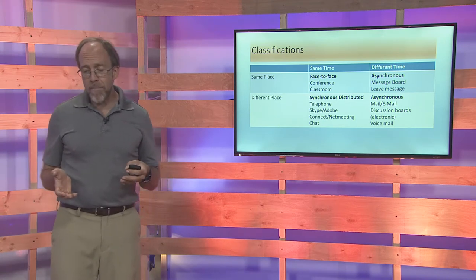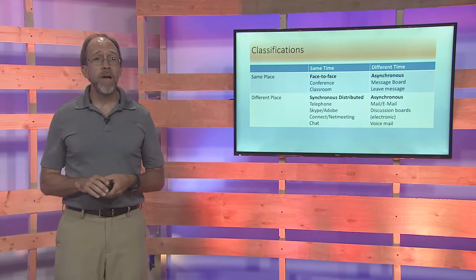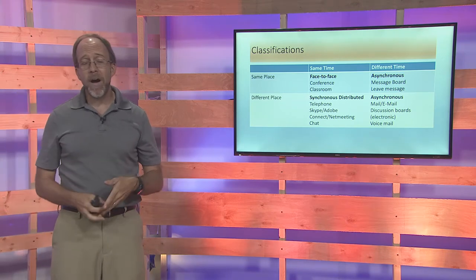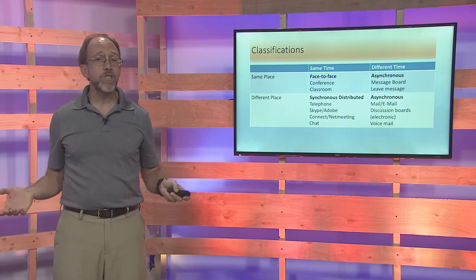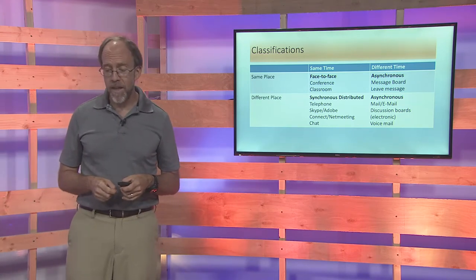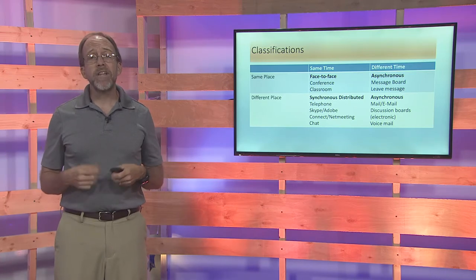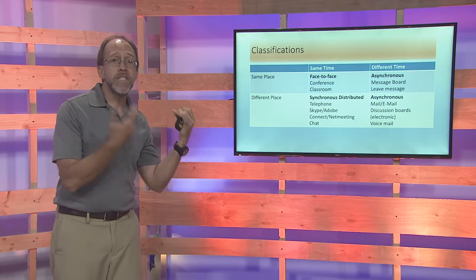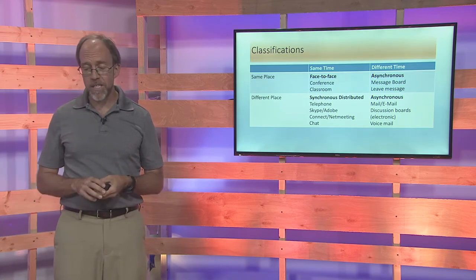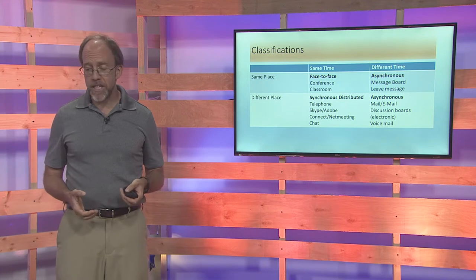Asynchronous means we don't communicate at the same time. Bulletin boards in hallways are actually asynchronous groupware systems — somebody posts 'I've got an apartment for rent,' sticks it on the board, and you come by later and pull off the phone number. That's a form of groupware: same place but different time. Similarly, recorded lectures available to students at a different time are also asynchronous. These are all methods of communication with interfaces that work together.